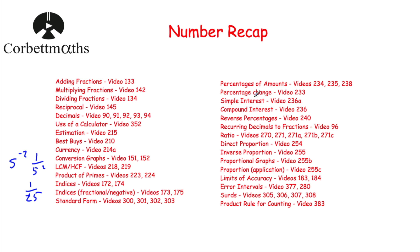Simple interest: the interest is the same every single year, so work out, for instance, 10% to begin with and add that same amount on every year. Compound interest: for a calculator question, use initial amount multiplied by the multiplier to the power of time. For a non-calculator question, do it manually — for instance £500 at 10% compound interest for two years: increase £500 by 10% to get £550, then increase that by 10% to get the end of year two amount.